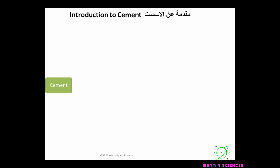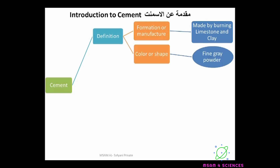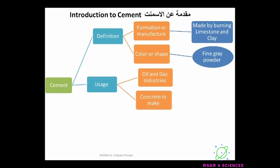Portland cement manufacture, chemical composition and classification. We can define Portland cement according to its formation or manufacture process, by explaining what it is made of or how it is made. We can define it as a fine powder that has a gray color. We use Portland cement in oil and gas industries in well cementing, or in concrete to make buildings, dams, roads, and more.